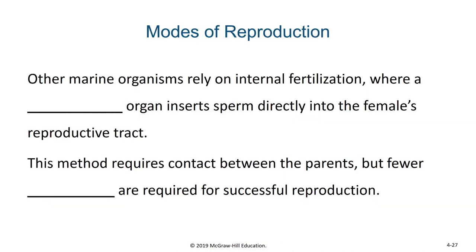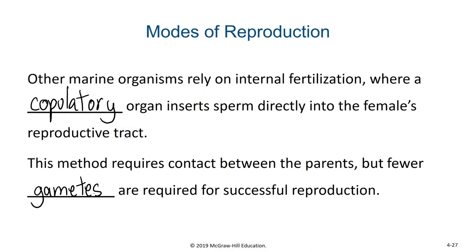There are other marine organisms that rely on internal fertilization. With internal fertilization, there is a copulatory organ or penis that inserts sperm directly into the female's reproductive tract. There are some sessile organisms that are able to reproduce in this way — one example is a barnacle. The male barnacle has a penis that is more than three times the length of the rest of its body, and with this it can reproduce with neighboring female barnacles. Internal fertilization does require contact between the parents, but fewer gametes are required for successful reproduction.